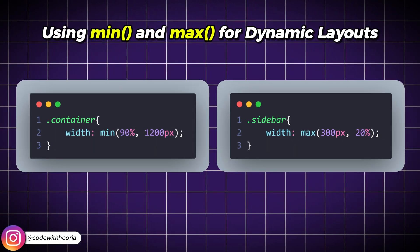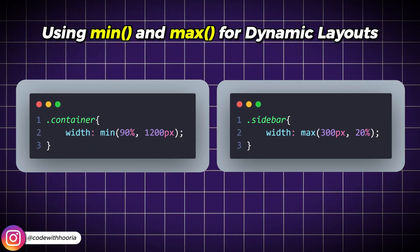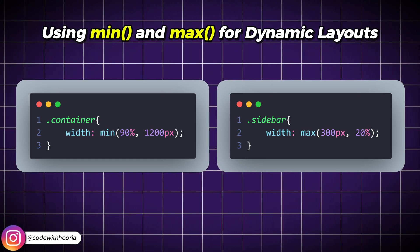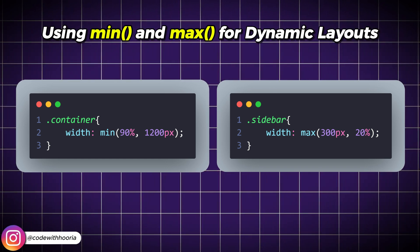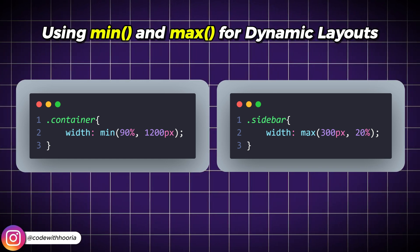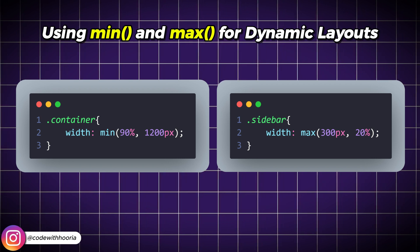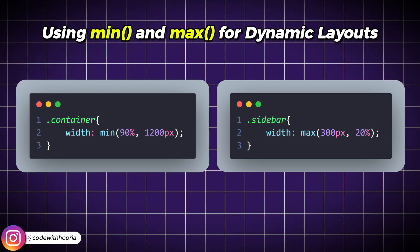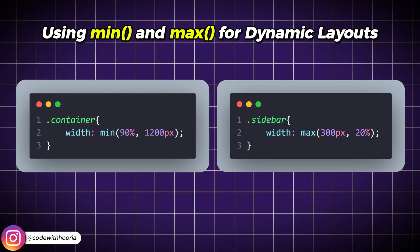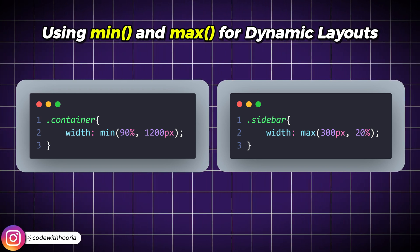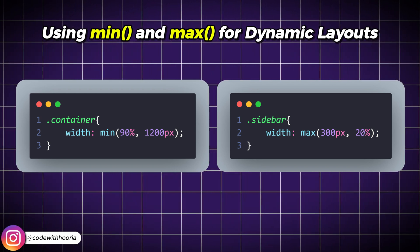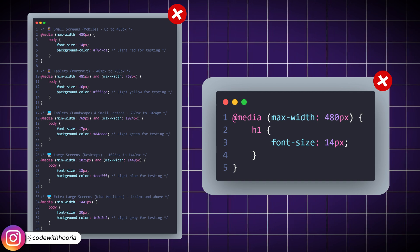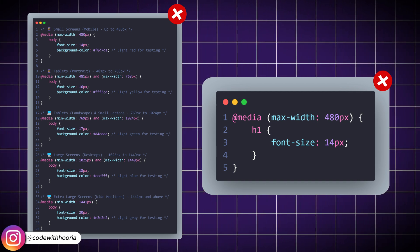Use the min property for main content areas to prevent your content from becoming too wide and difficult to read. Use the max property for sidebars, navigation menus, or cards that should stay visible without overpowering the main content. This approach helps you create clean, responsive layouts without relying on breakpoints or media queries, making your code more efficient and easier to manage.